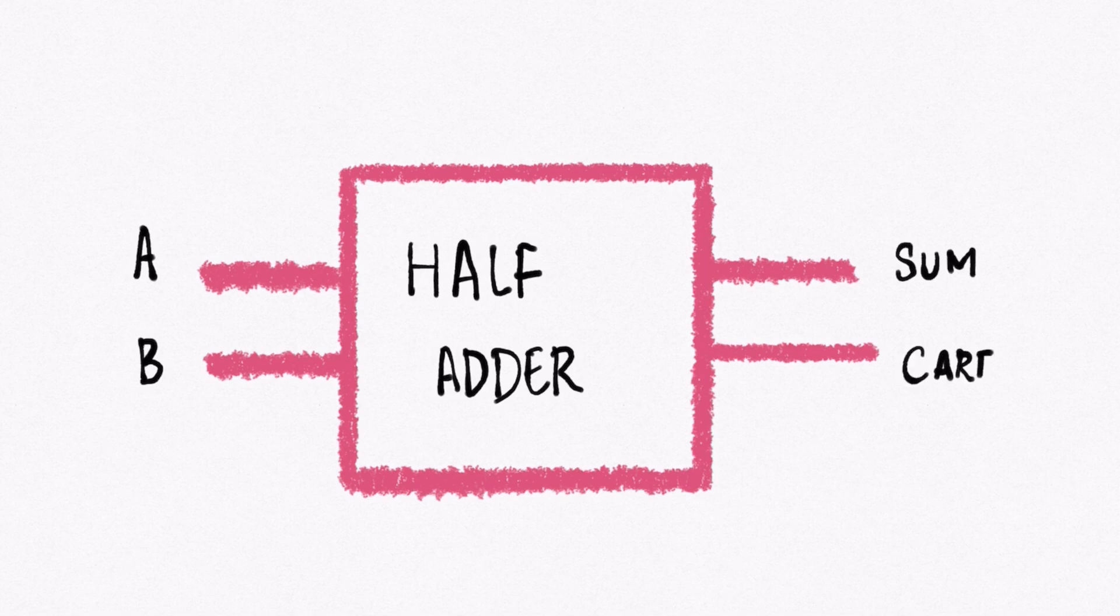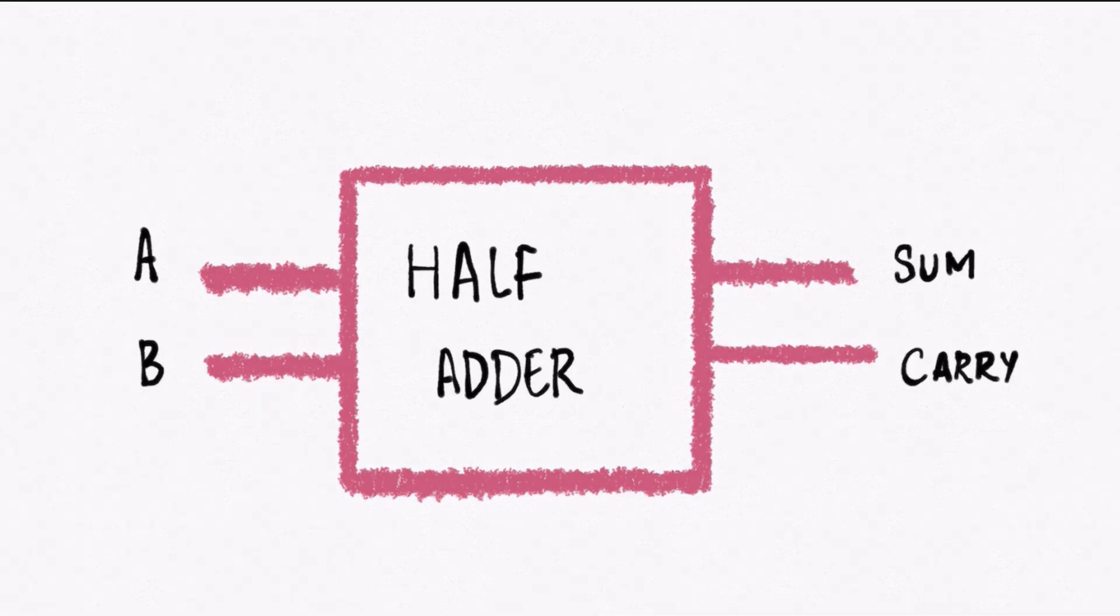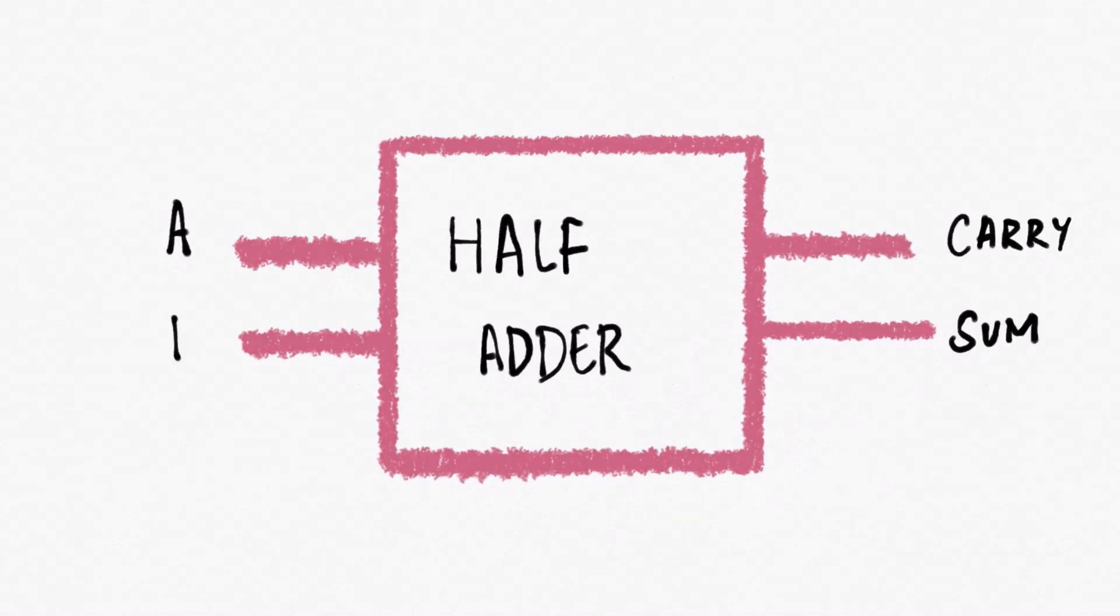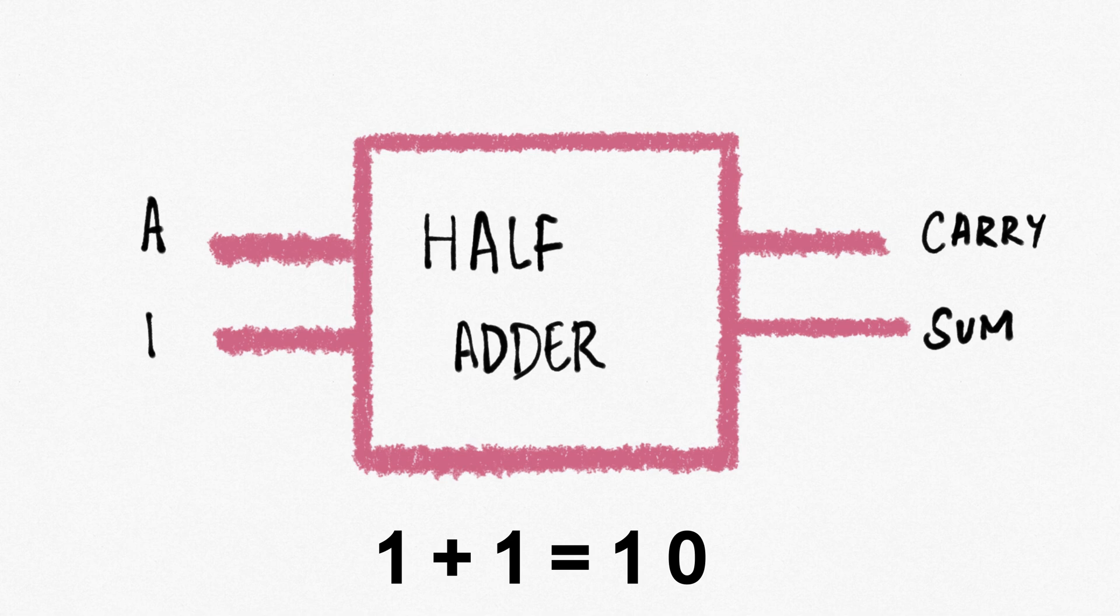Since both A and B are single bits, there can be only 4 possible outcomes. 0 plus 0 will sum to 0. 0 plus 1 will sum to 1. 1 plus 0 will sum to 1 again. 1 plus 1 will output 1 0, which is 2 bits. The least significant bit is output as the sum, and the next bit is carried over.